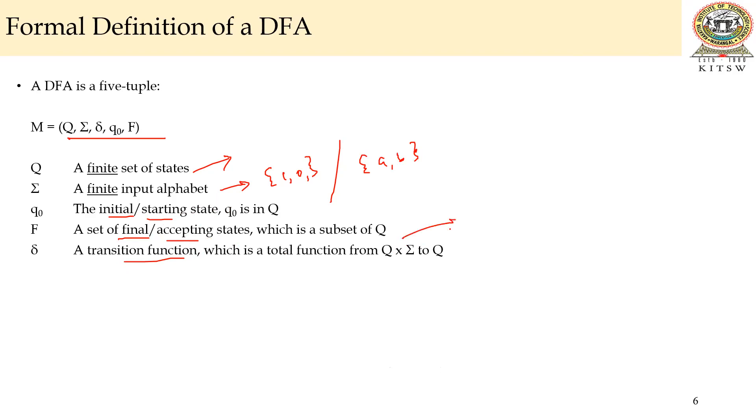Gamma is always number of states cross sigma, that is input symbols, equal to some state Q' in the queue. It could be Q' is equal to Q.